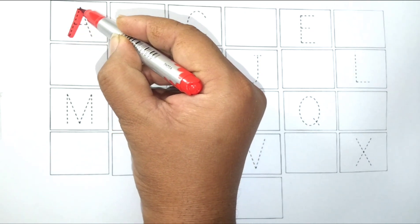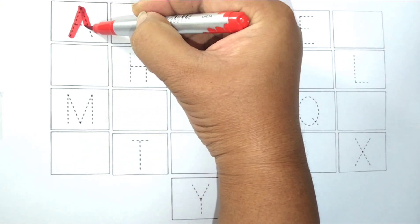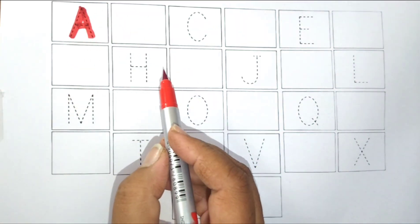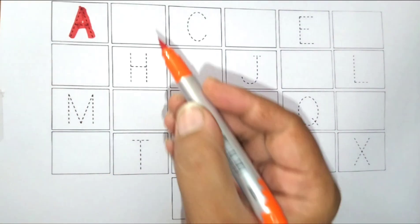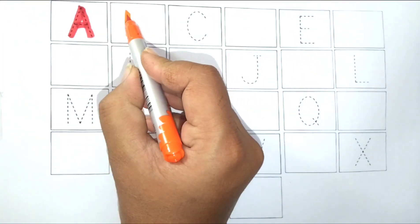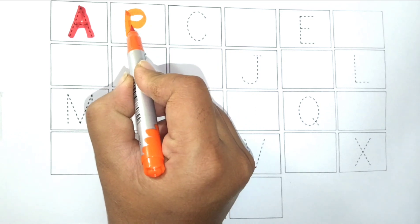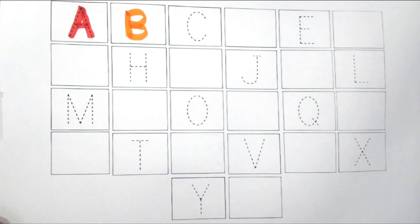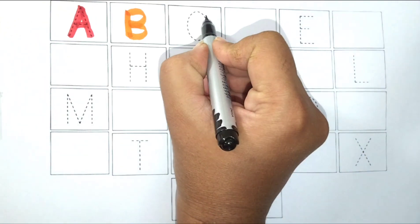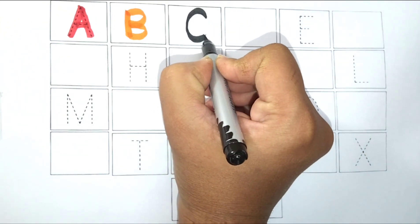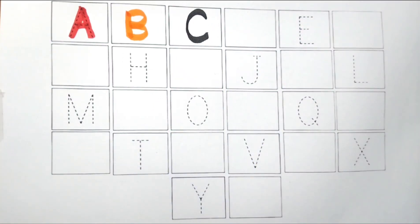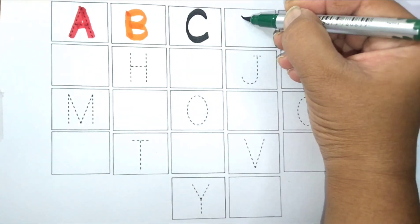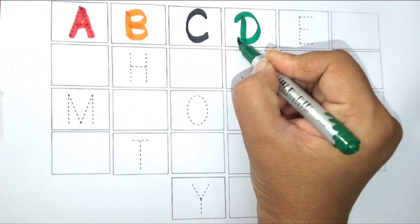A, A for apple. Orange color. B, B for ball. Black color. C, C for car. Green color. D, D for dog.